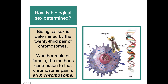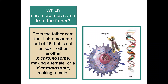How is biological sex determined? It's determined by the 23rd pair of chromosomes. Whether male or female, the mother's contribution to that chromosome pair is an X chromosome. From the father comes the one chromosome out of 46 that is not unisex — either another X chromosome making a female, or a Y chromosome making a male.